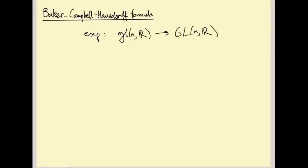And what we did was we found a neighborhood of the origin, called U, inside little gl(n,R), and a neighborhood of the identity, V, inside big GL(n,R). And we found a map called log that goes back from V to U, such that exp composed with log is the identity, and log composed with exp was the identity.